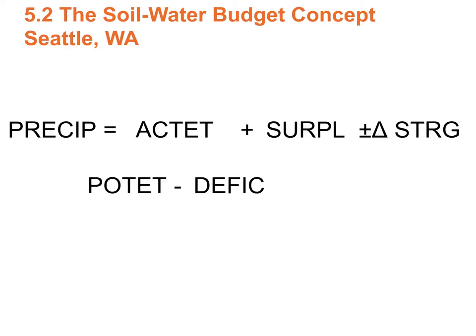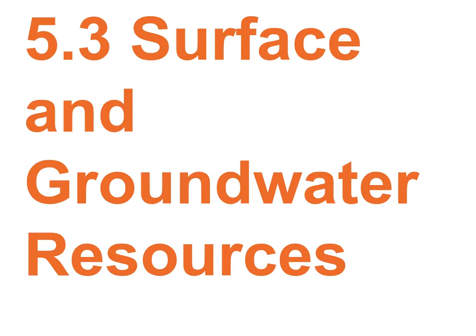Let's look at Seattle — a very different water budget. They get about 50 inches of rain a year, and their POTET is about 30 inches. Since precip is greater than or equal to POTET, the ACTET is going to be 30 inches. We get 50 inches of rain but only have 30 inches of energy to use that water, so ACTET is 30. That leaves 20 inches as surplus. I'll put up a separate video on the soil water budget with more examples.